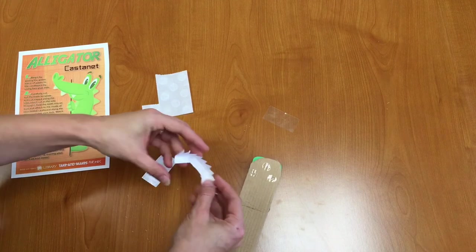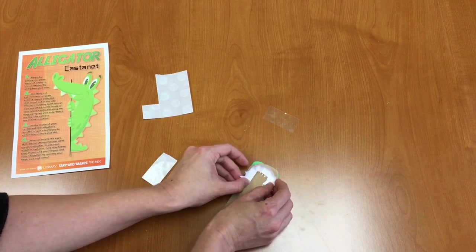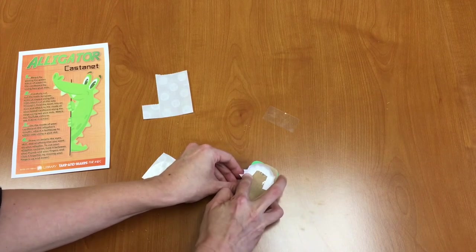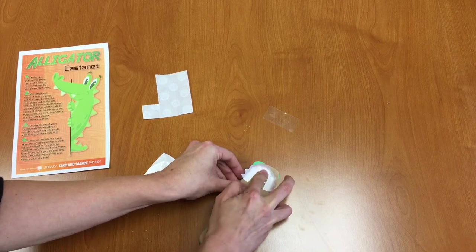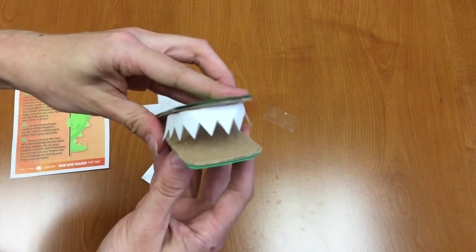And then from there we're just going to shape our teeth onto there. And press down. So see how it makes a U. And now we have our alligator teeth.